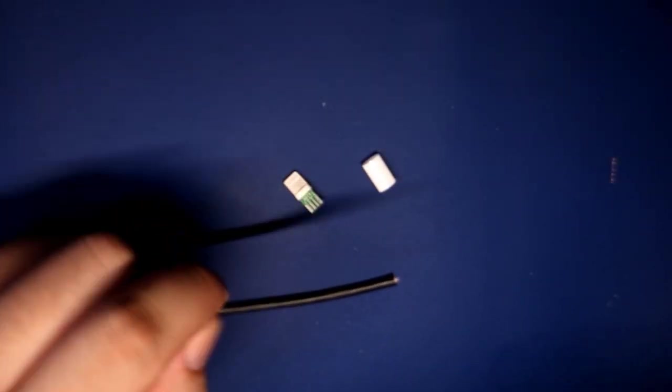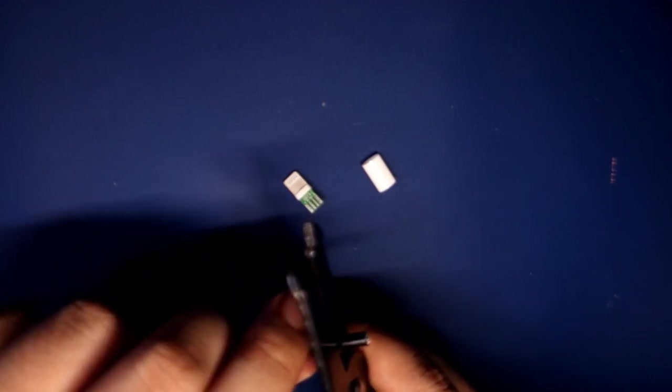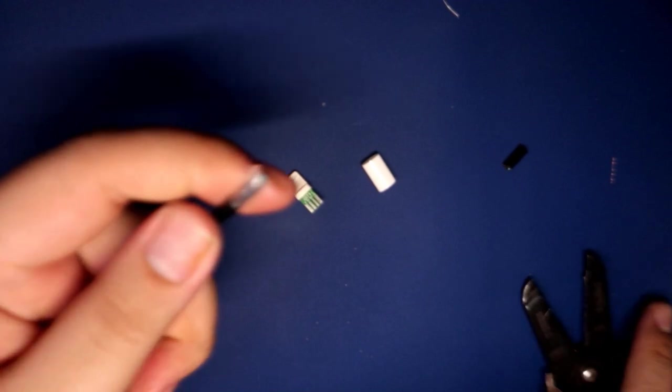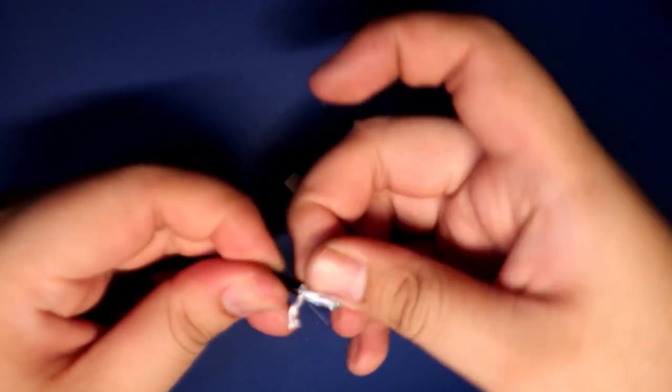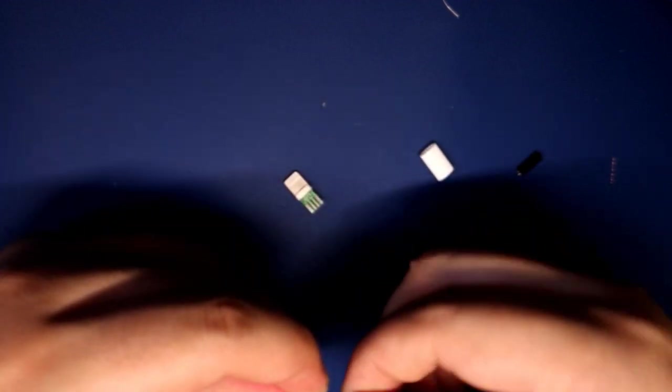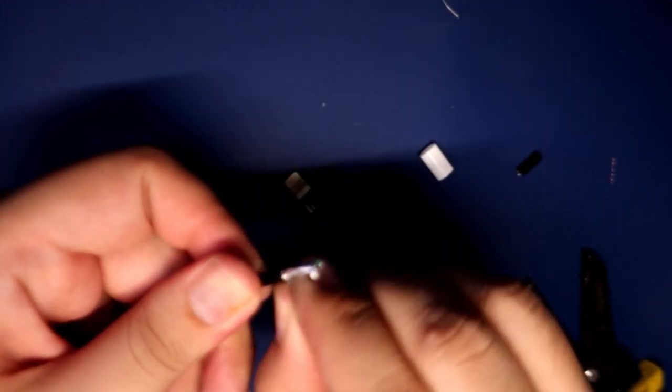Making this cable won't be too much different than making other types of USB cables, but I'm going to start with my cable unsleeved here as I found it's easier to work with the shell without sleeving on it initially. So I'm going to go ahead and strip off the end of our cable here which we'll be using to solder the connector onto.